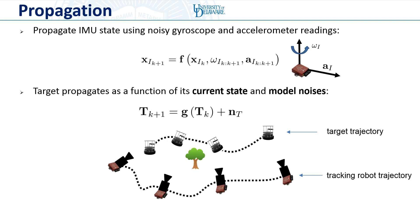For propagation, it's well known how to utilize the noisy IMU readings provided by the gyroscope and accelerometer to predict the IMU state forward in time. For the target, we don't have such access to direct information of how its state is evolving. Instead, we assume a motion model which says that the target's state at a future time is a function of its current state, as well as some model noises.